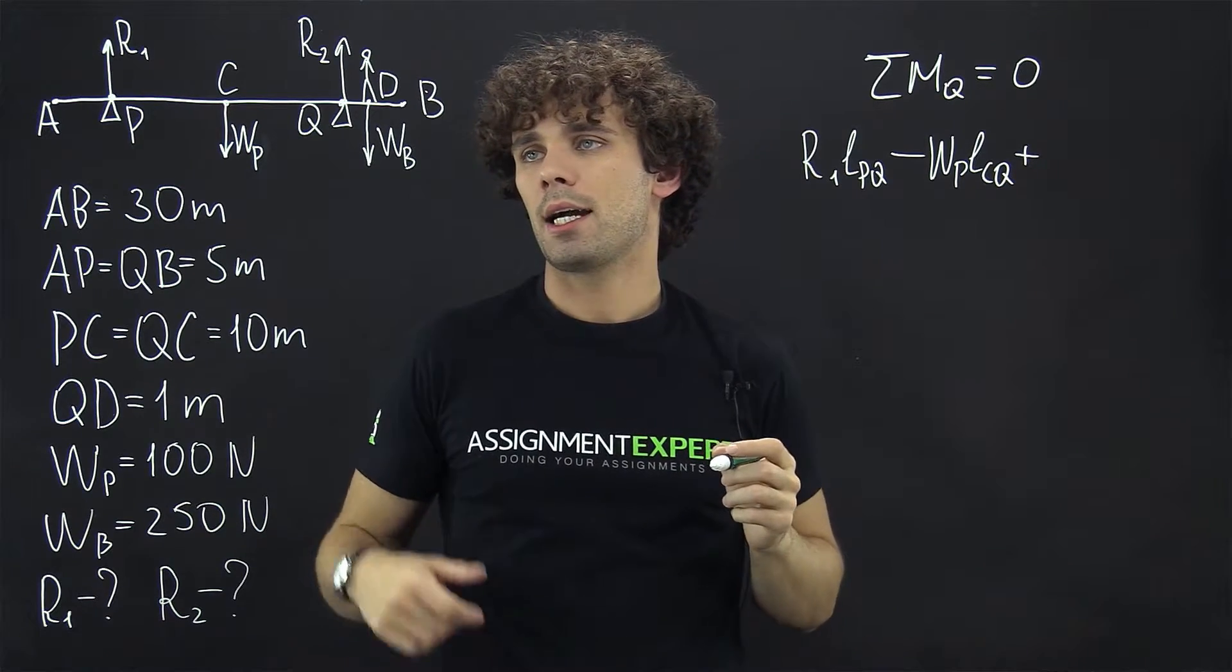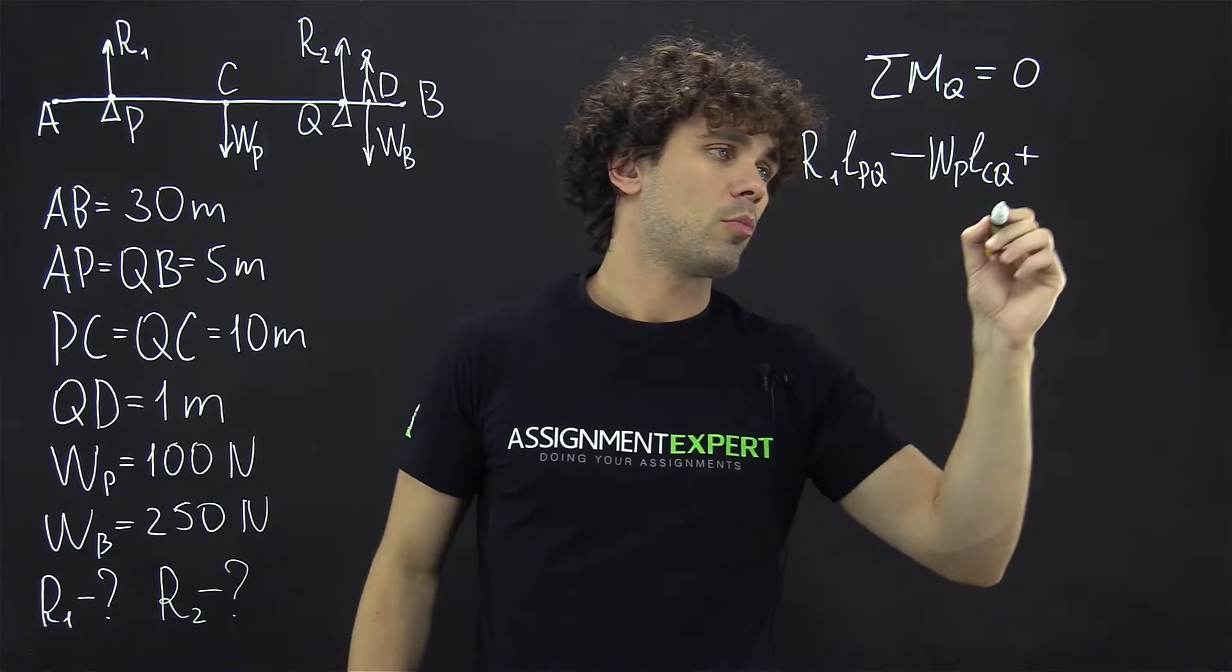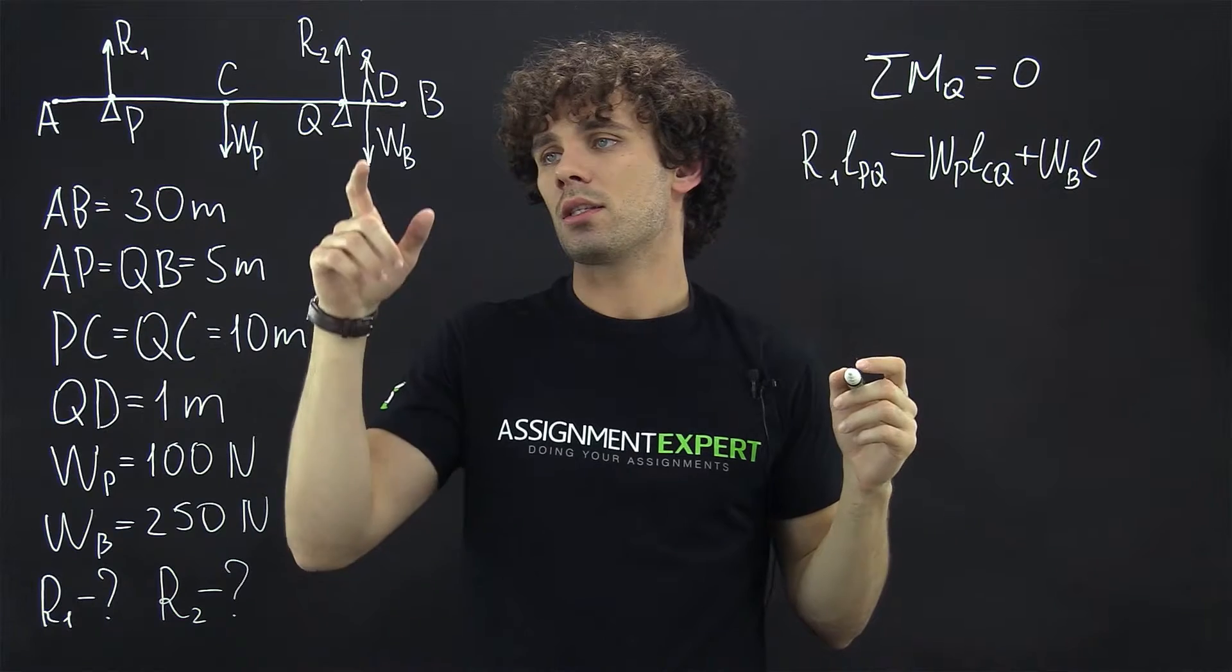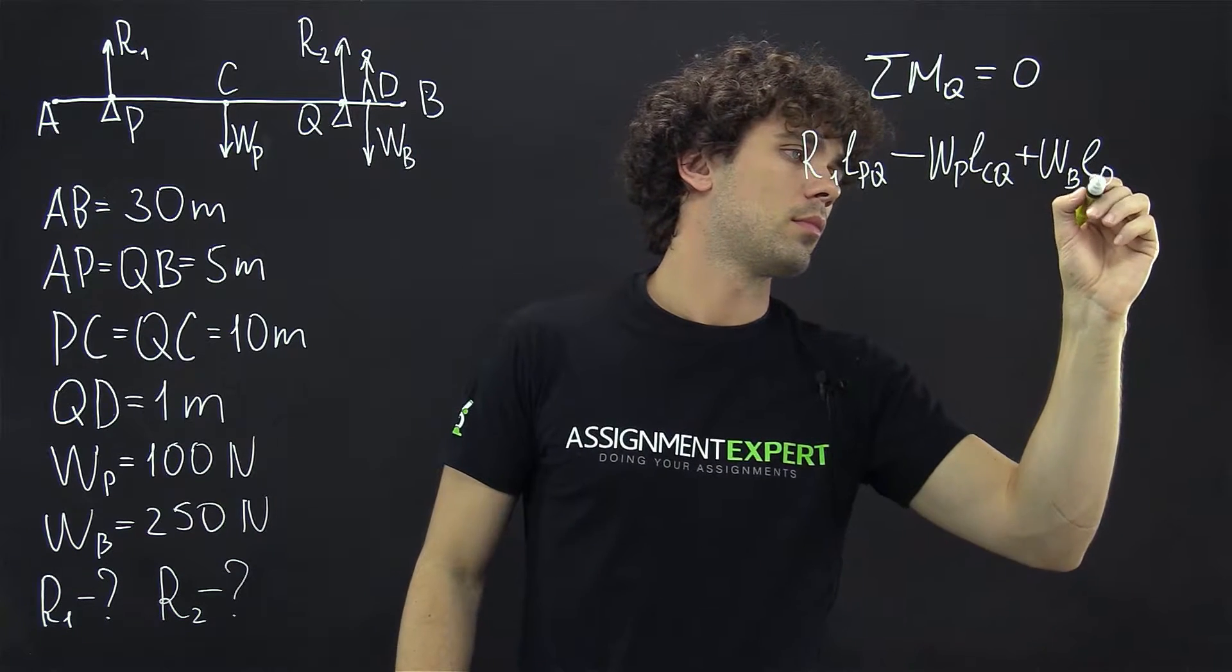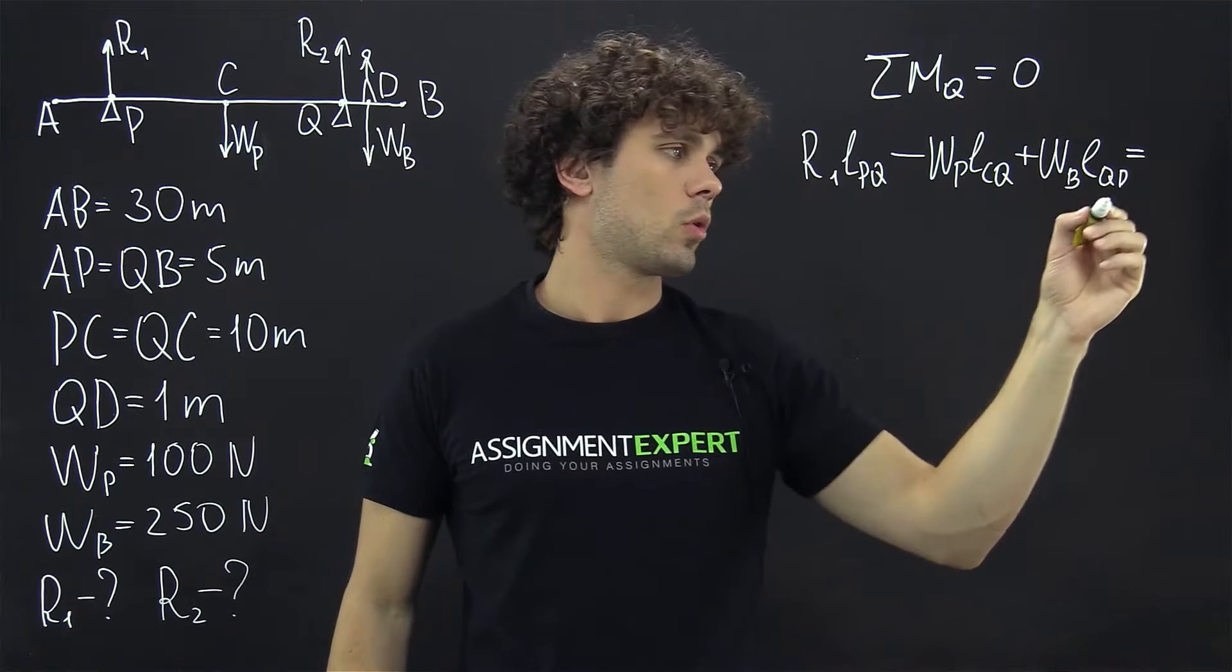And finally, with a plus sign, we have the buoy which has weight WB, and the distance here is LQD. And all of this is equal to 0.